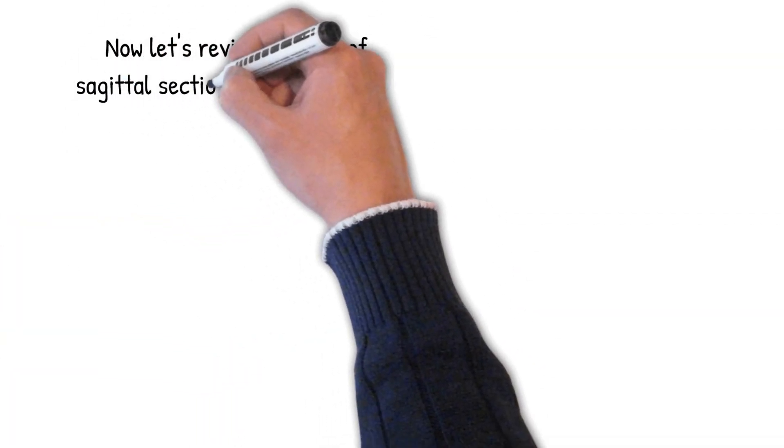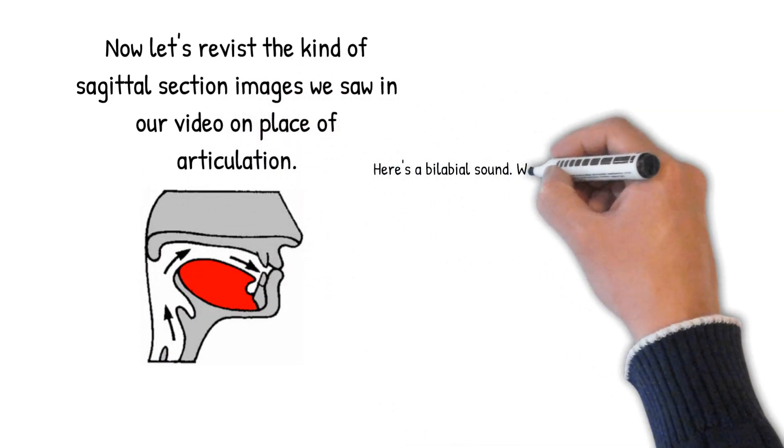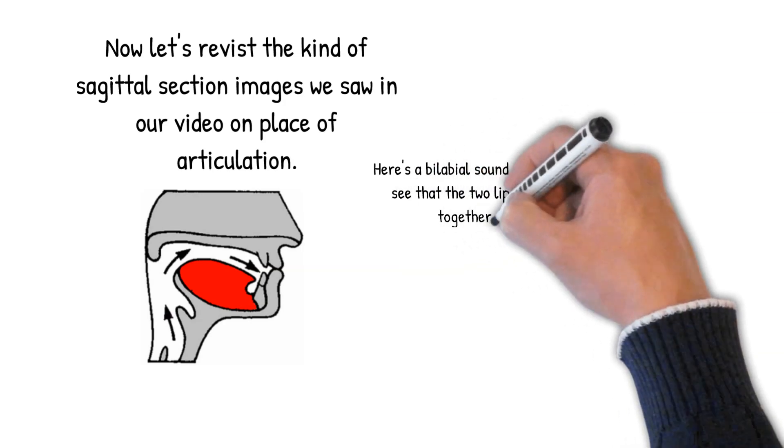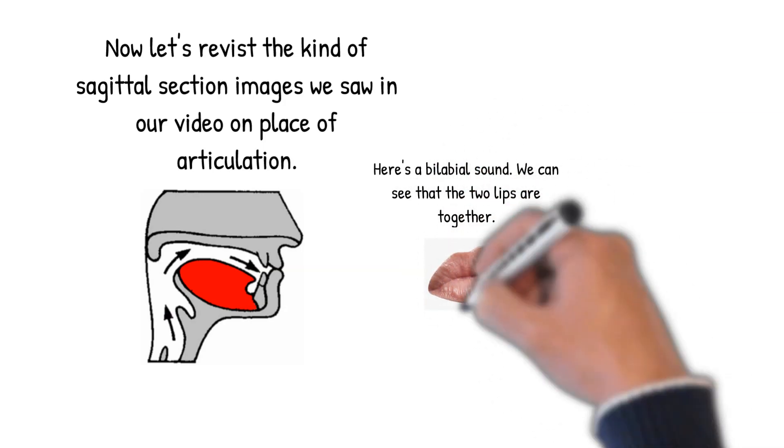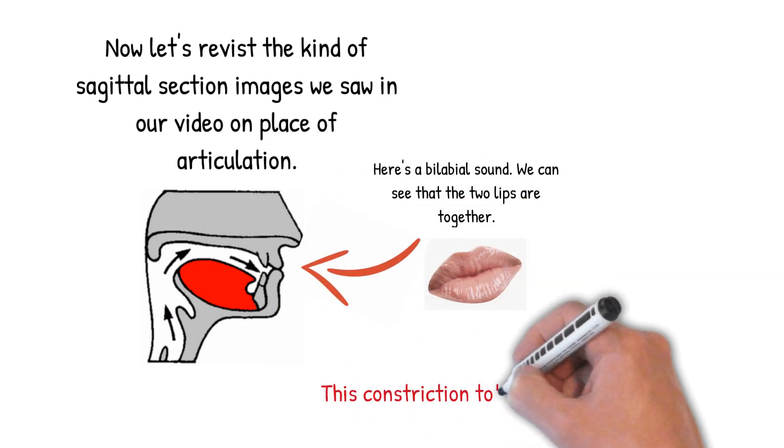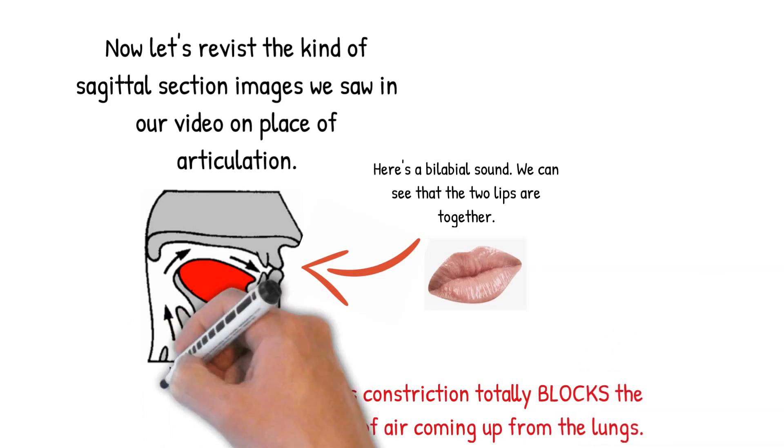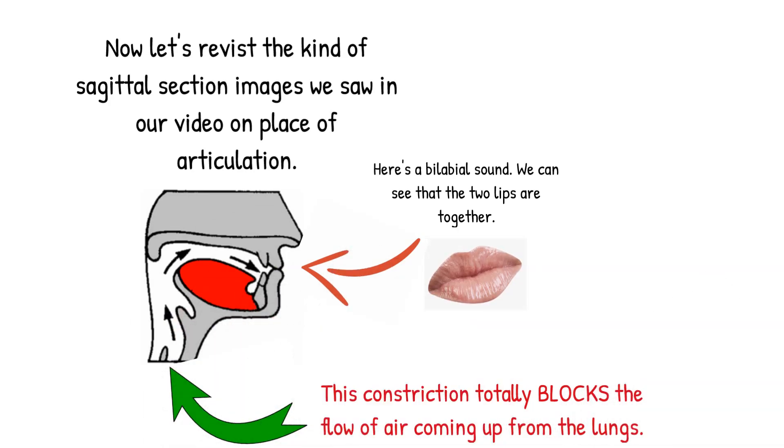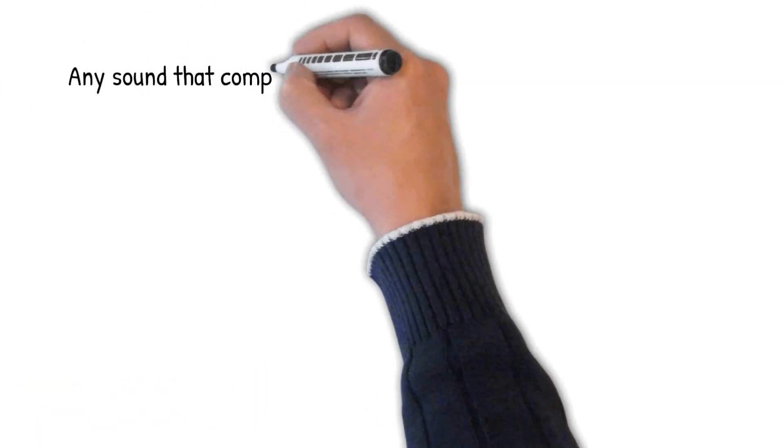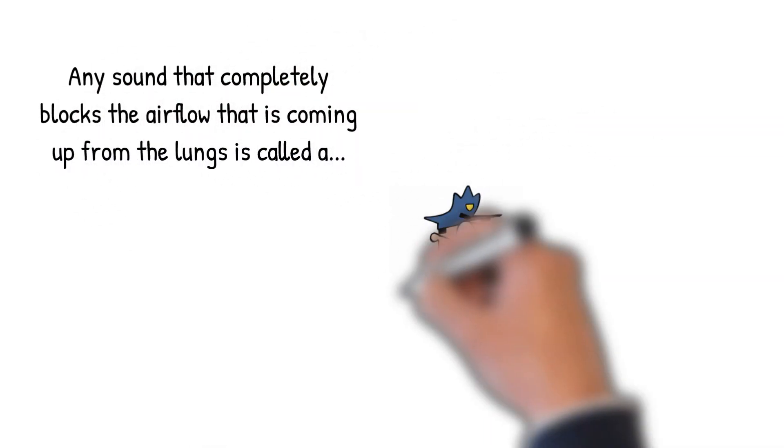Okay, now let's revisit the sagittal section images that we saw in our presentation on place of articulation. This is clearly an image of a bilabial sound, which we can see because the two lips are pressed together. But what's most important for our purposes here is that that bilabial constriction completely blocks the flow of air coming up from the lungs. Any sound that completely obstructs the airflow that's coming up from the lungs is called a stop.